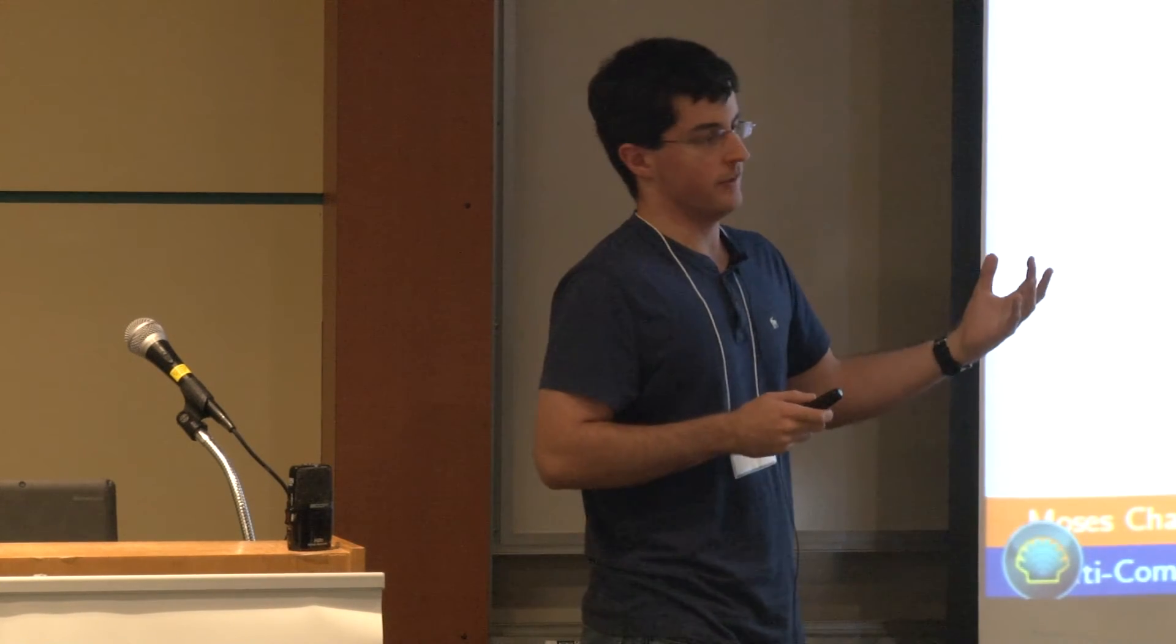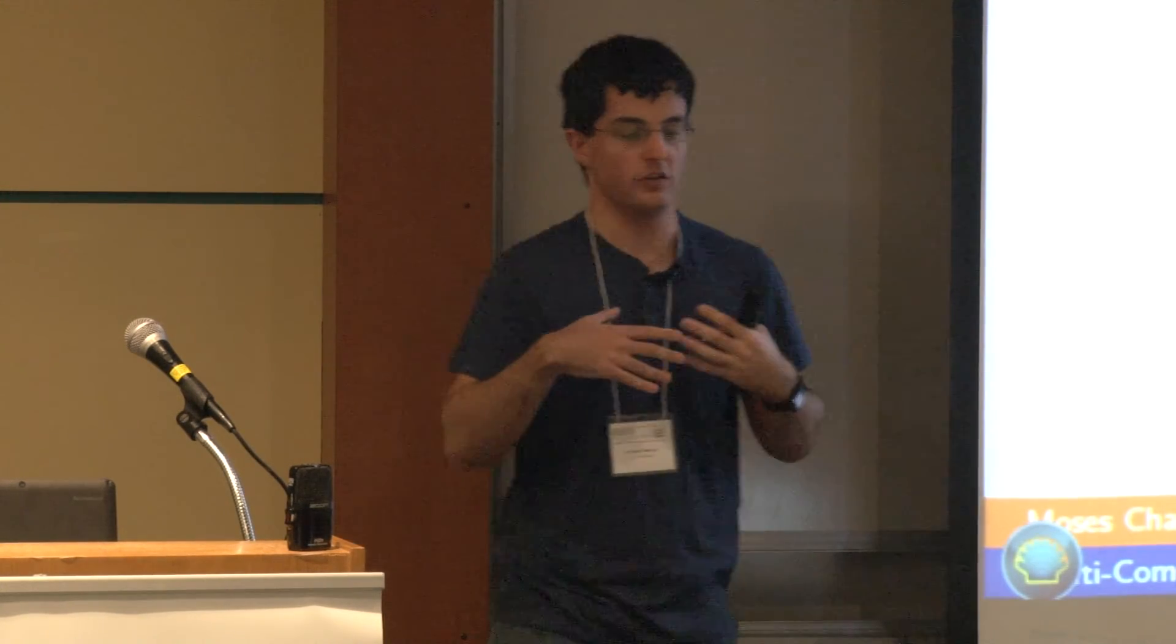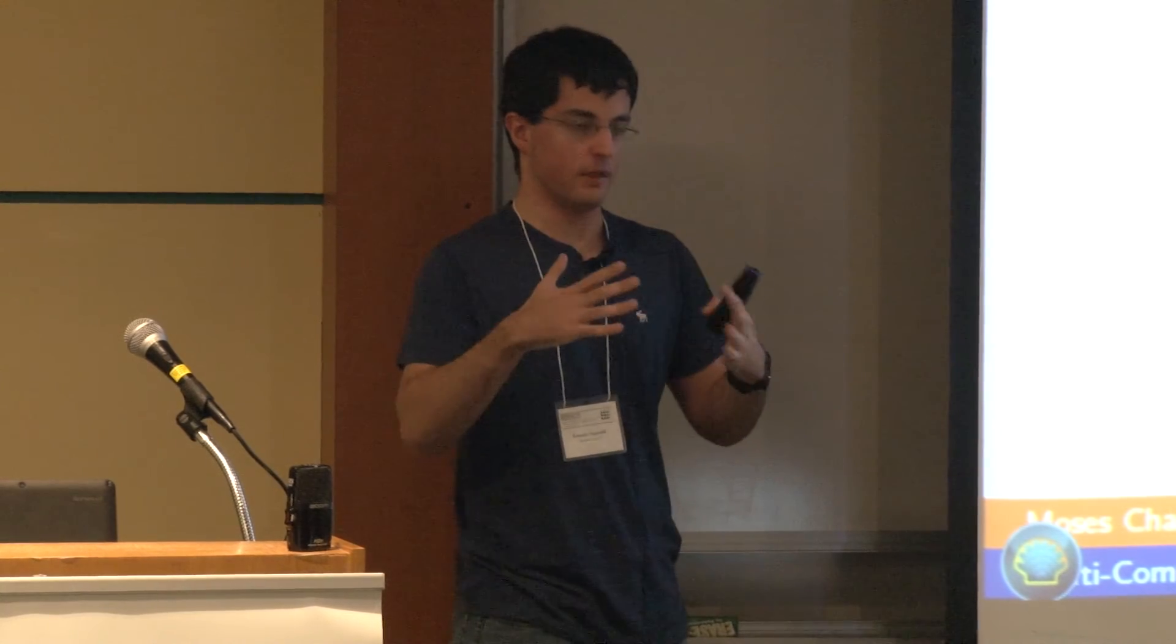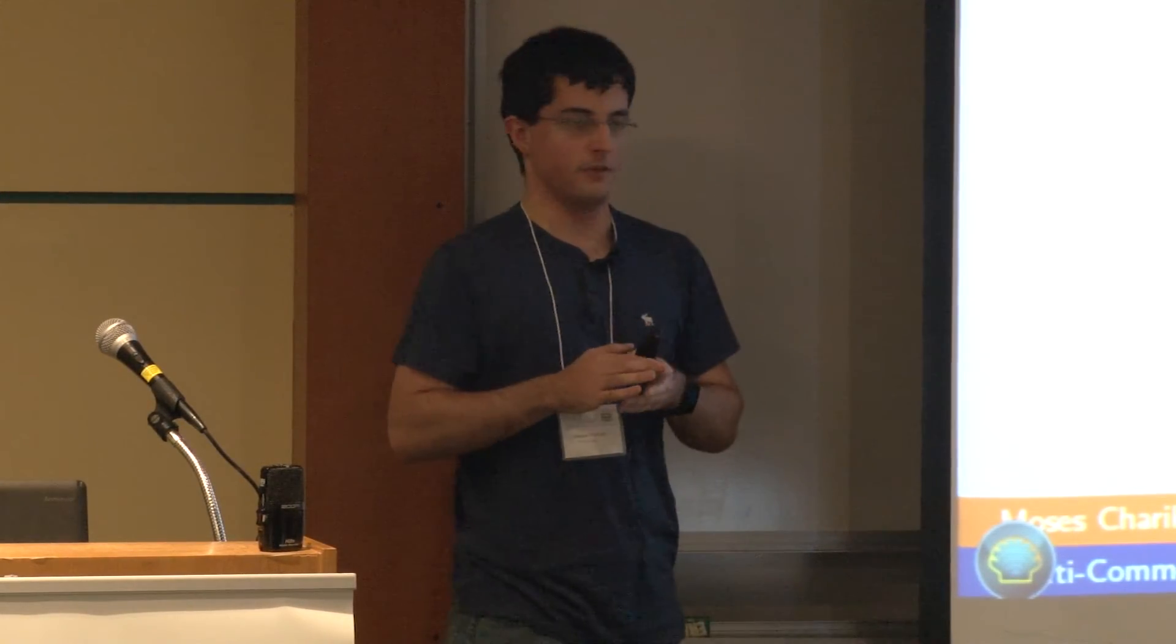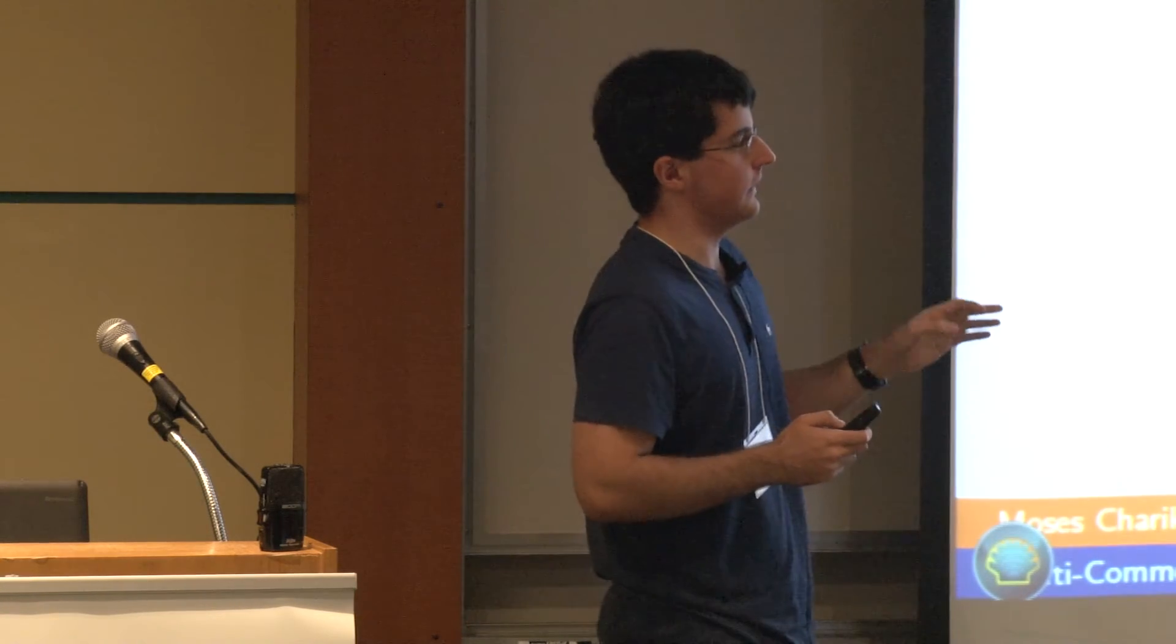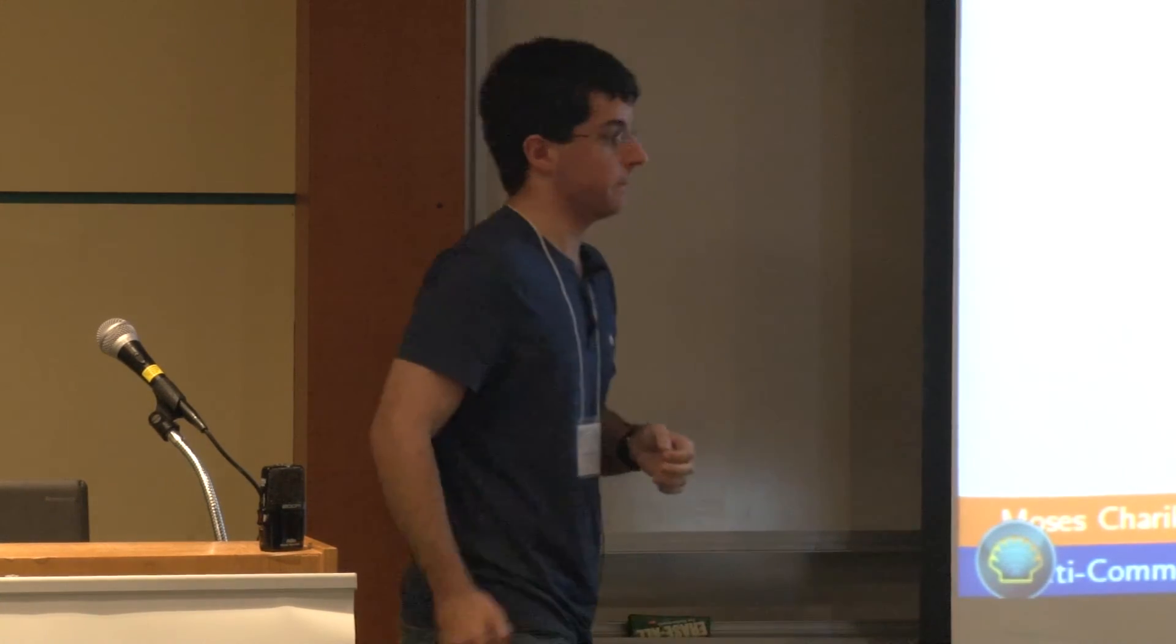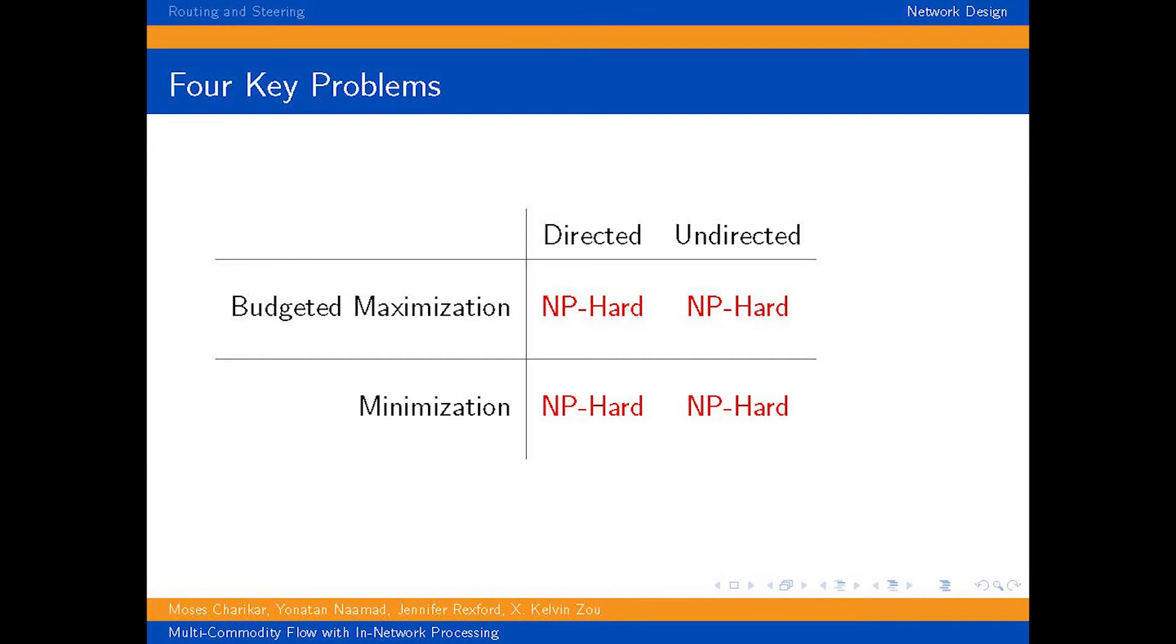The minimization problem says, we have all of these demands. We want to route all of them. We can't miss anything. How do we use as little budget as possible to make that happen? And for both of these, you can ask the directed and the undirected problem. Turns out all of these are NP-hard.